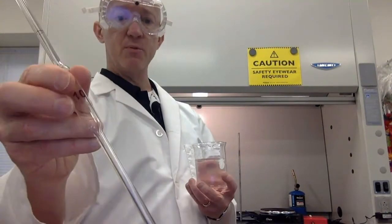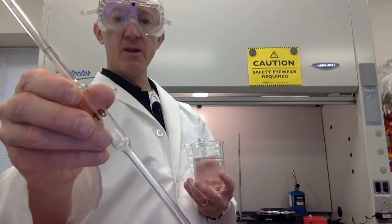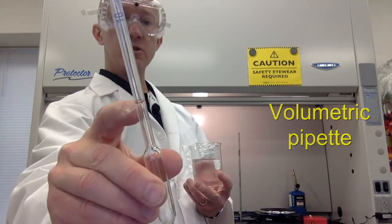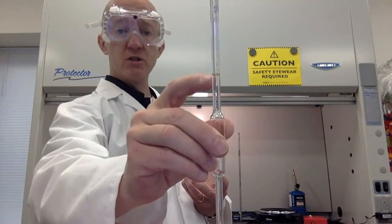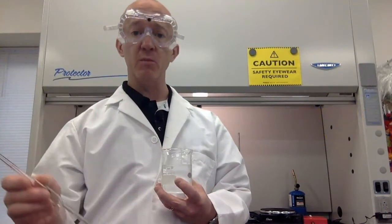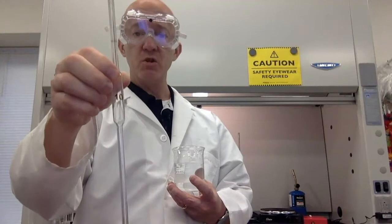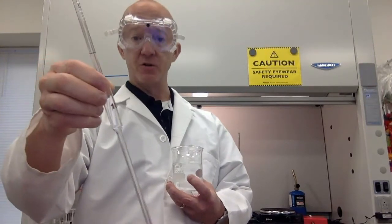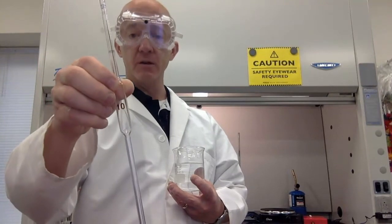We also have some that give us very precise measurements. This is a volumetric pipette. And again, notice the little line right there. We use this line the same way we do for a volumetric flask. We want to transfer exact amounts of liquid. This one happens to transfer exactly 10 milliliters.